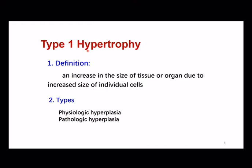Firstly, the definition of hypertrophy. That means an increase in the size of tissue or organ due to increased size of individual cells. There are two types of hypertrophy: physiologic hypertrophy and pathologic hypertrophy.